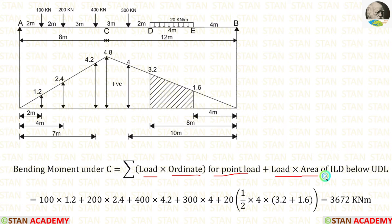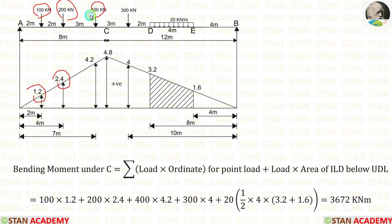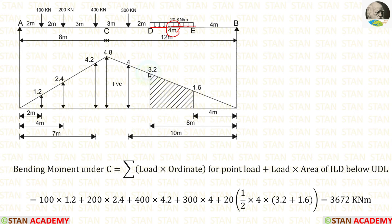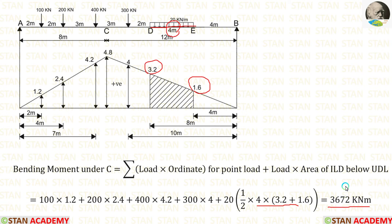For the UDL, we have to multiply the load with the area. So: 100×1.2 + 200×2.4 + 400×4.2 + 300×4, then for the UDL: 20 × area, where the area formula is ½ × b × (H1 + H2). The breadth is 4 m, H1 = 3.2, H2 = 1.6. Applying the formula, we finally get 3672 kNm as the bending moment.